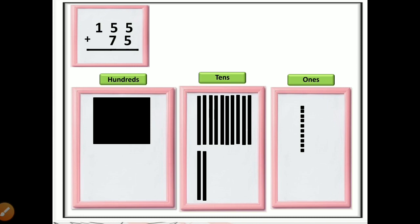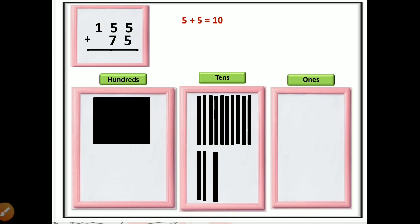Our first step is addition of the ones place. The numbers in the ones place are 5 and 5. Five plus five equals 10. Since 10 is a two-digit number, we make a bunch of 10 small square blocks — all combine together and make a stick, which we forward to the tens position. No small square blocks are left in the ones position, so 0 comes in the ones place.